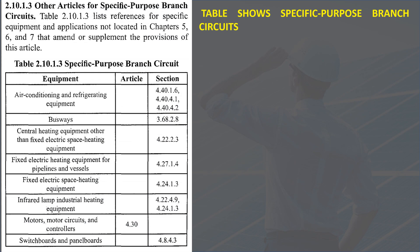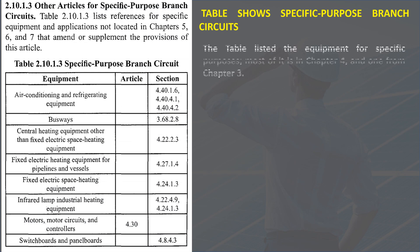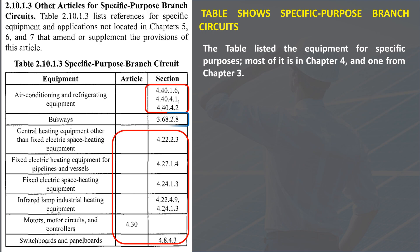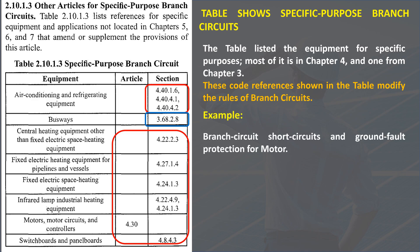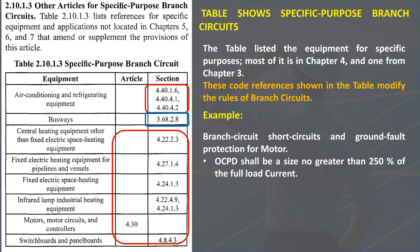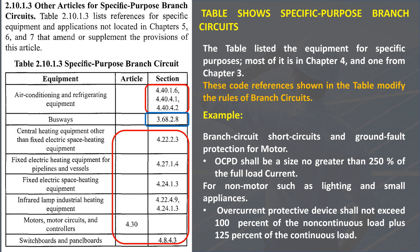The table lists equipment for specific purposes, most of it in Chapter 4 and one from Chapter 3. These code references shown in the table modify the rules of branch circuits. For example, for branch circuit short circuit and ground fault protection for motors, the overcurrent protective device shall be a size no greater than 250% of the full load current. While for non-motor loads such as lighting and small appliances, the overcurrent protective device shall not exceed 100% of the non-continuous load plus 125% of the continuous load.